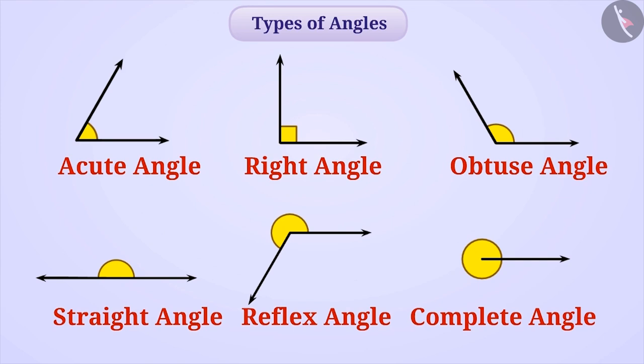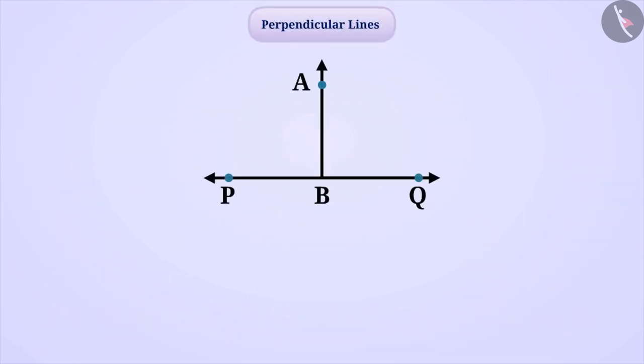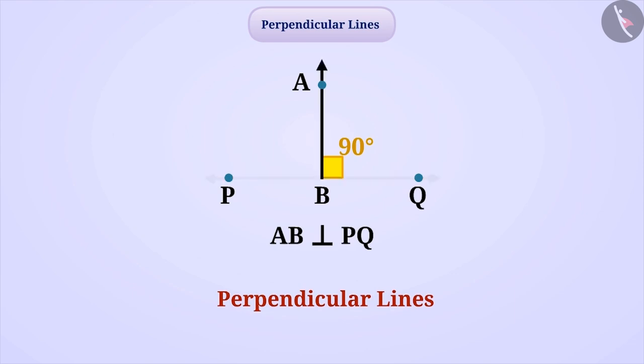With this, we will now understand another concept related to angles. Consider that two lines are intersecting each other at 90 degree angle. Such lines are called perpendicular lines. We write it like this: AB perpendicular to PQ and read it as line AB is perpendicular to line PQ.